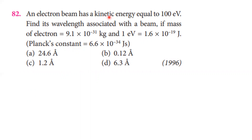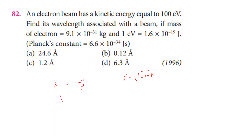An electron beam has kinetic energy equal to 100 electron volts. Find the wavelength associated with the beam, given mass of electron is 9.1 times 10 to the power minus 31 kg, 1 eV equals 1.6 times 10 to the power minus 19 joules, and Planck's constant h equals 6.6 times 10 to the power minus 34. The de Broglie wavelength is h divided by momentum, where momentum equals the square root of 2m times kinetic energy.